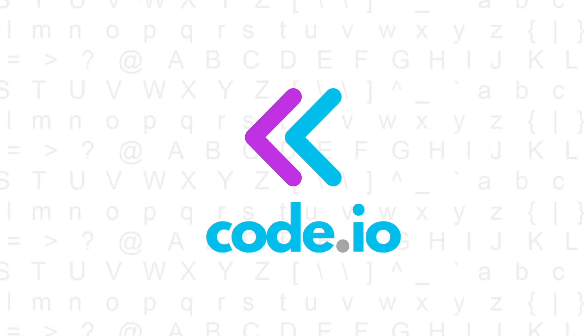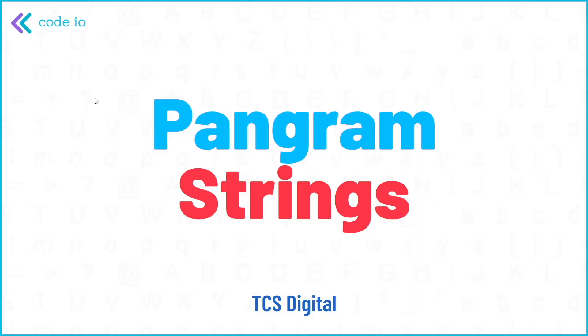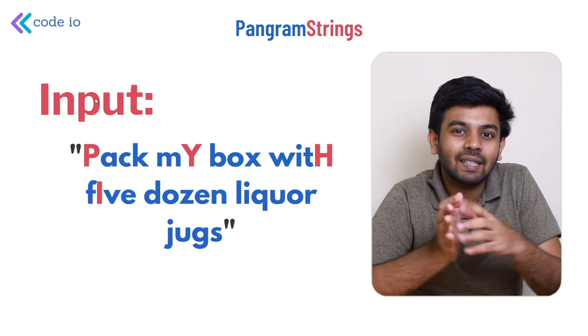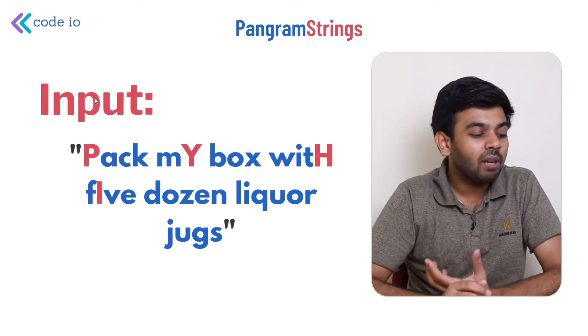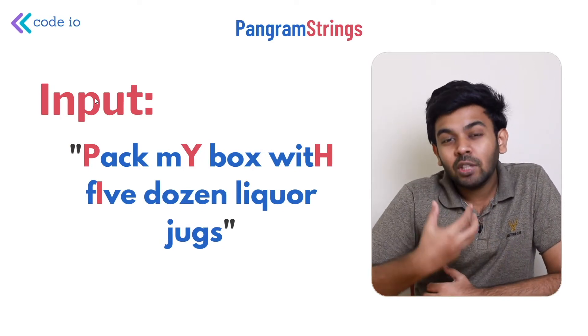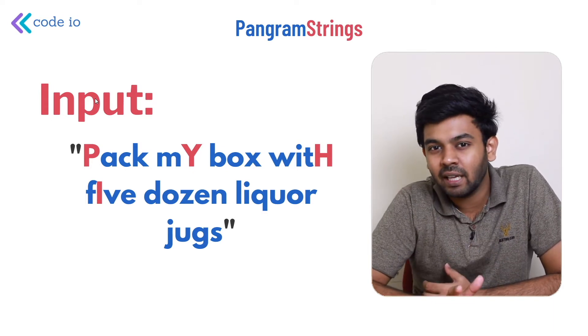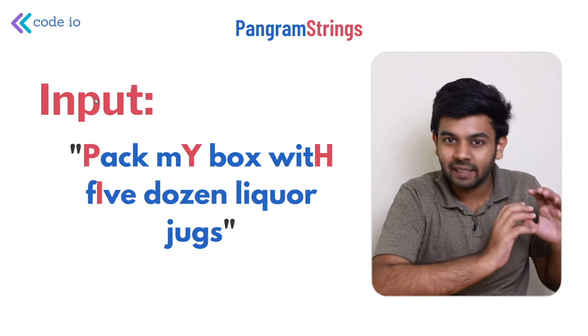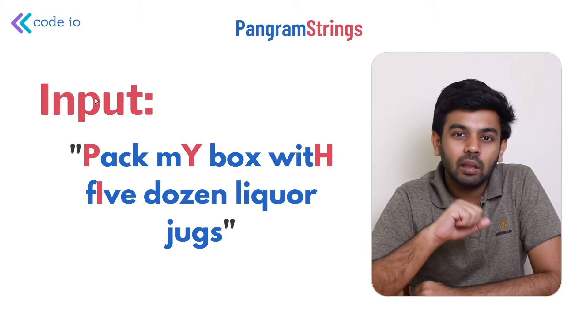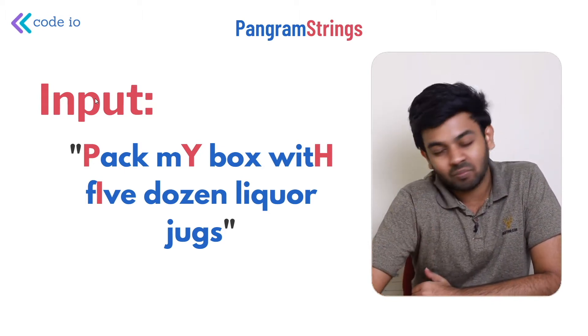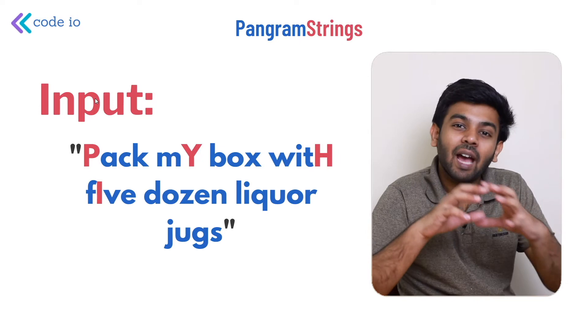Welcome to Codeivo. In this video we'll be solving a question called Pangrams, which has been asked in TCS Digital. The input of the question is a string, and what we have to do is check if all the alphabets present in the English language are present in this string. There are 26 alphabets, so we have to check if all of them are present.